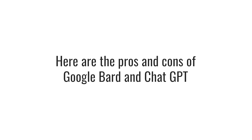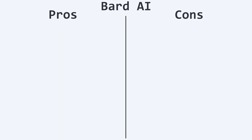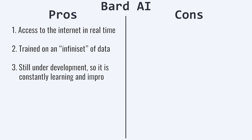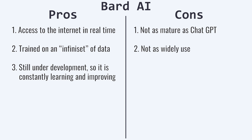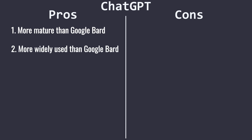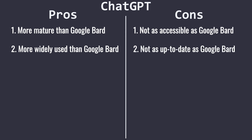Pros and cons. Google Bard pros: access to the internet in real time; trained on a large dataset and still under development, so it is constantly learning and improving. Google Bard cons: not as mature as ChatGPT; not as widely used as ChatGPT. ChatGPT pros: more mature than Google Bard; more widely used than Google Bard. ChatGPT cons: not as accessible as Google Bard; not as up-to-date as Google Bard.